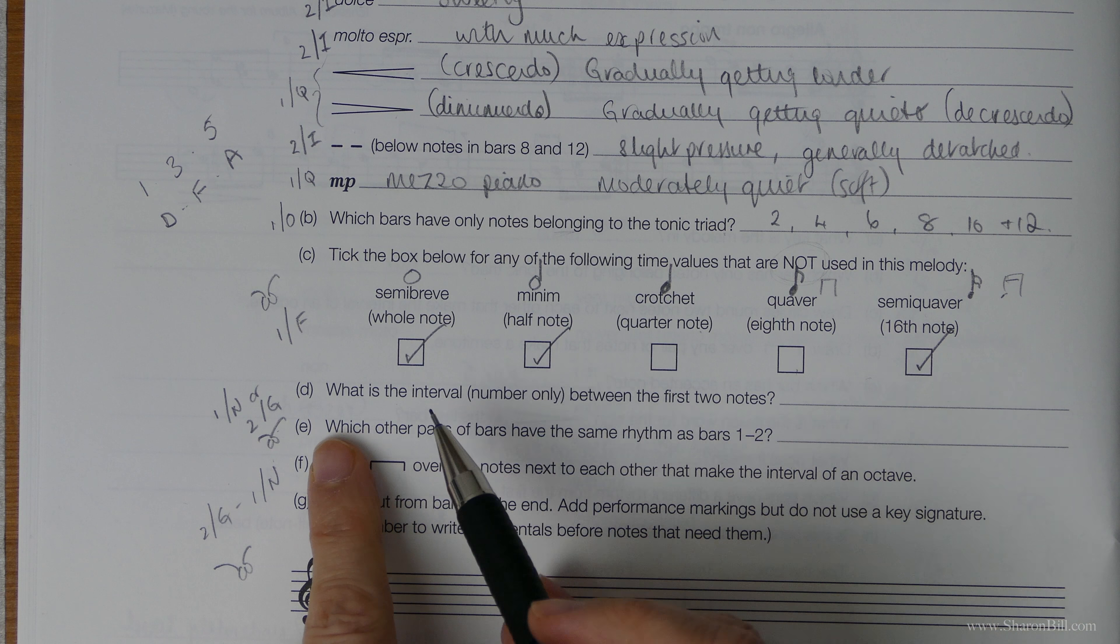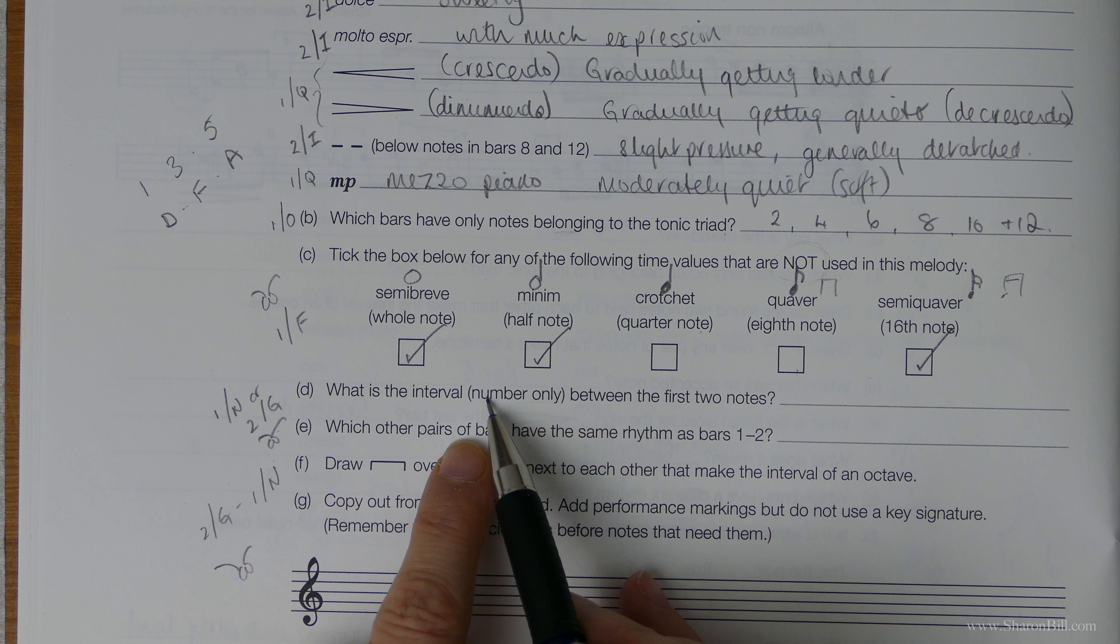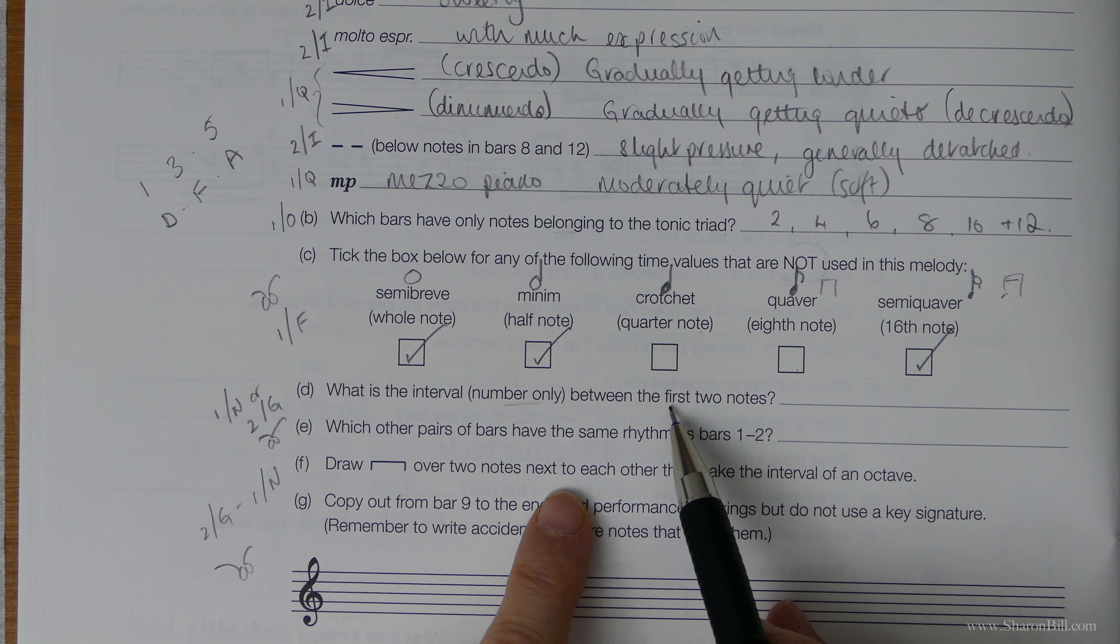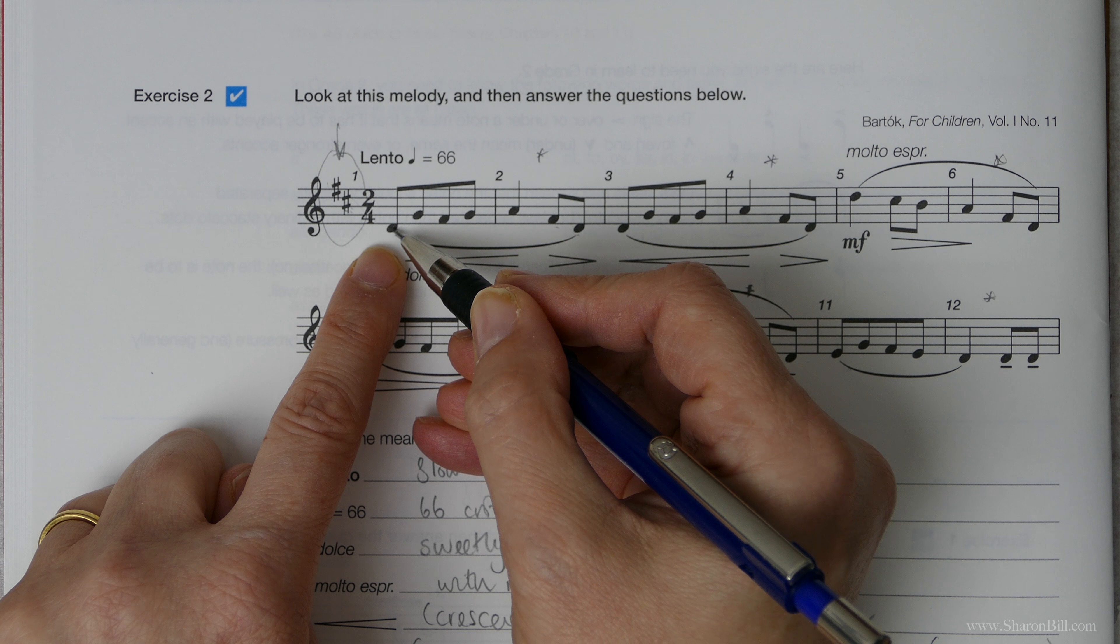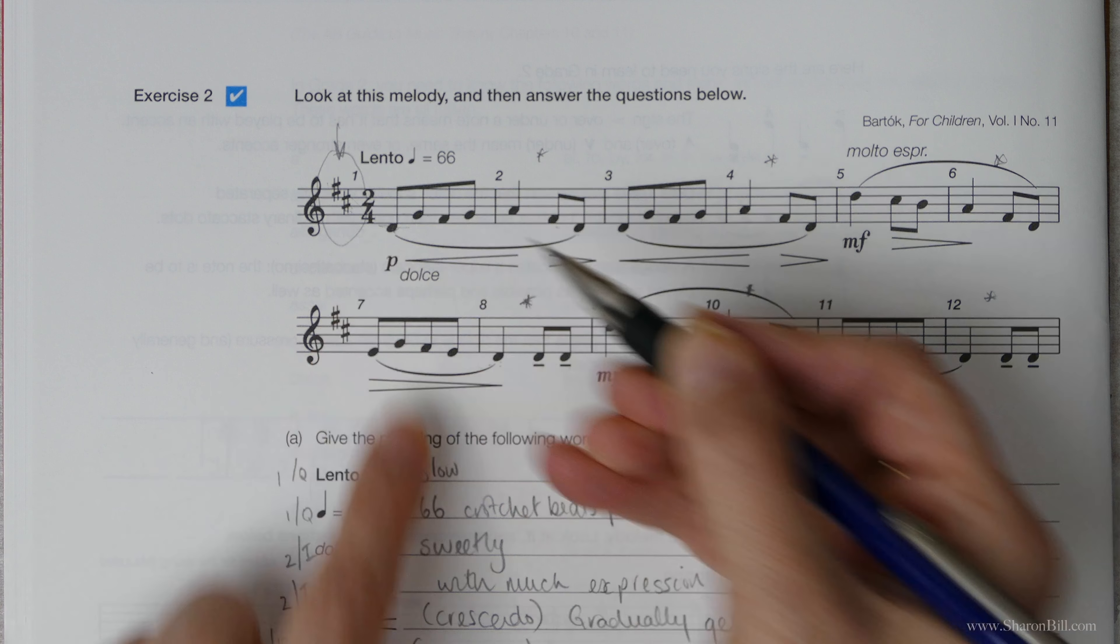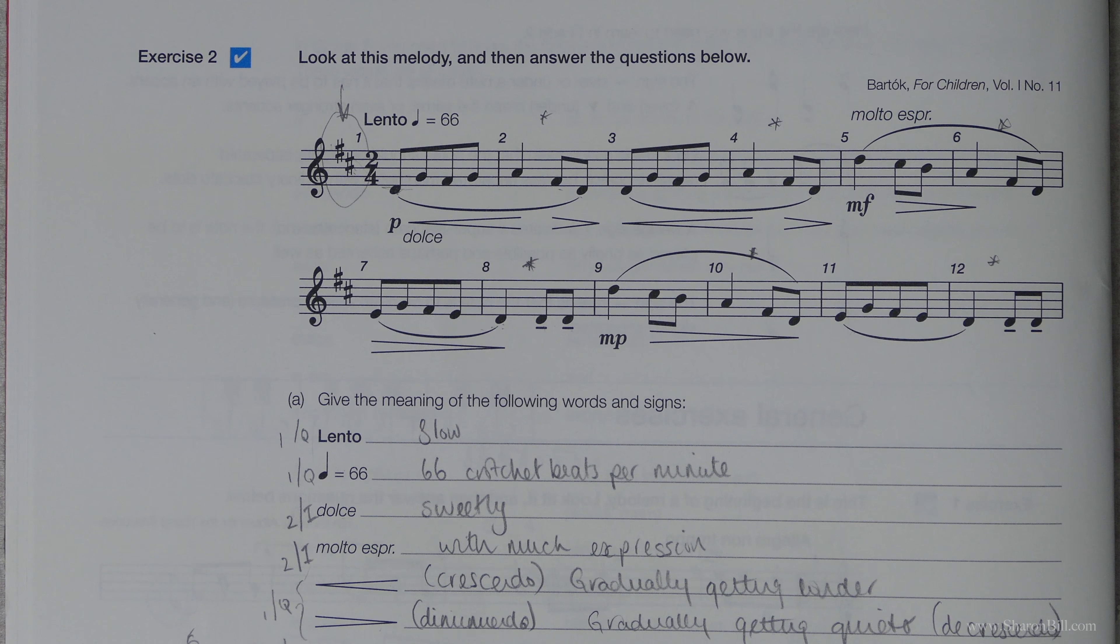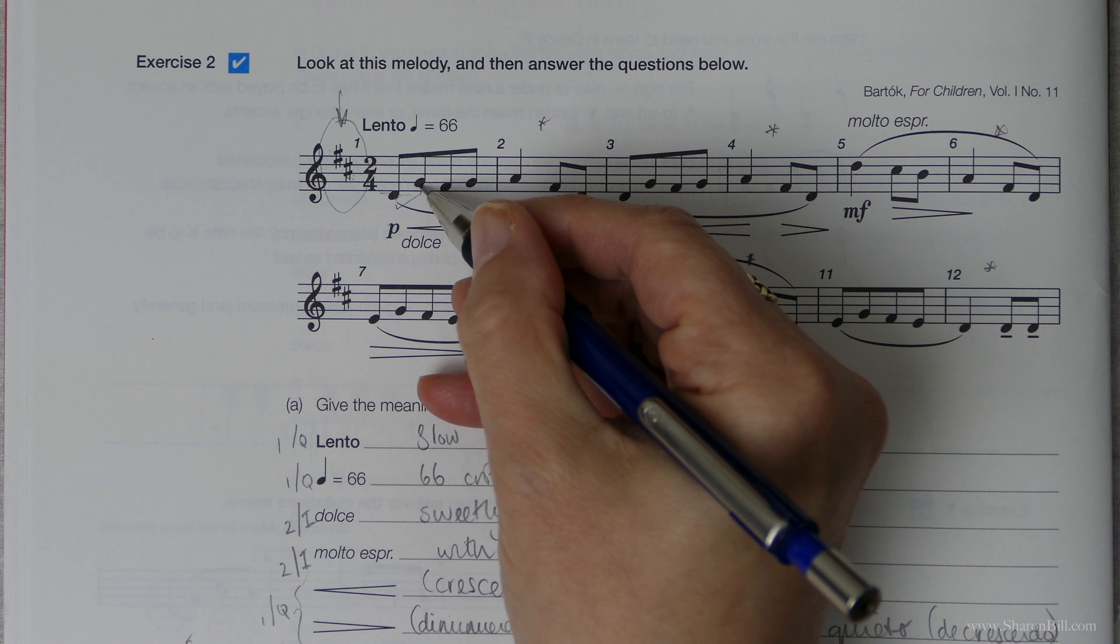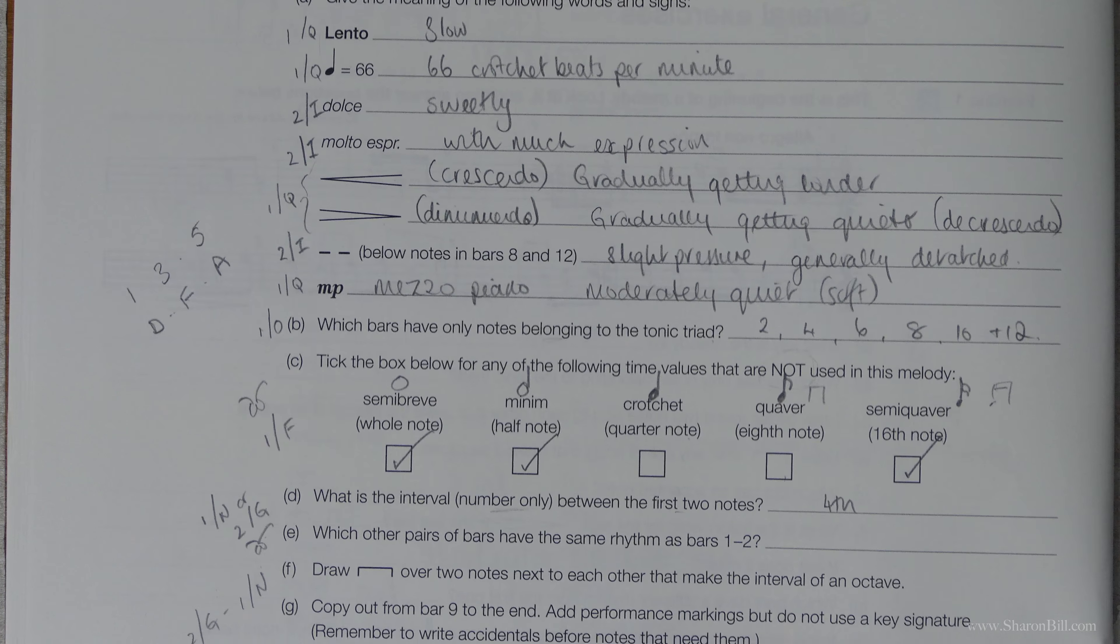Pressing on. What is the interval number only? They're not asked, now this all this means is they don't need to know whether it's melodic or harmonic. They just want to know the distance between the notes on the first two notes of the extract. So the first two notes are these two notes. Don't forget to count the bottom note as note one. So we got one, two, three, four. So it's the distance of four steps away, so we would say a fourth. They just want the number.